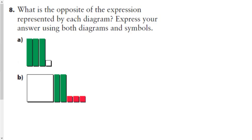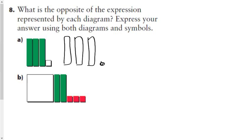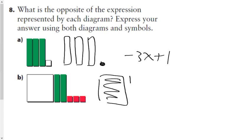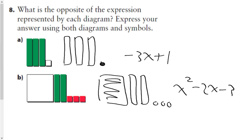Question 8: what is the opposite of the expression — express your answer using both diagrams and symbols. Since the first one is shaded, the next one will not be. This picture says negative 3x plus 1, which is the opposite of that. The opposite of this picture would be a solid x-squared, two negative x's, and negative 3 — which is x² minus 2x minus 3.